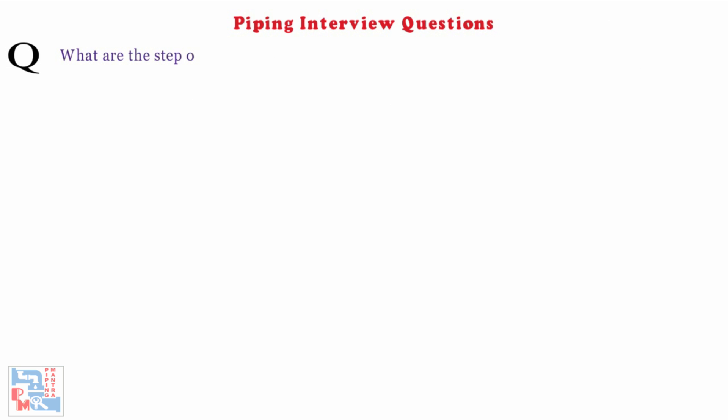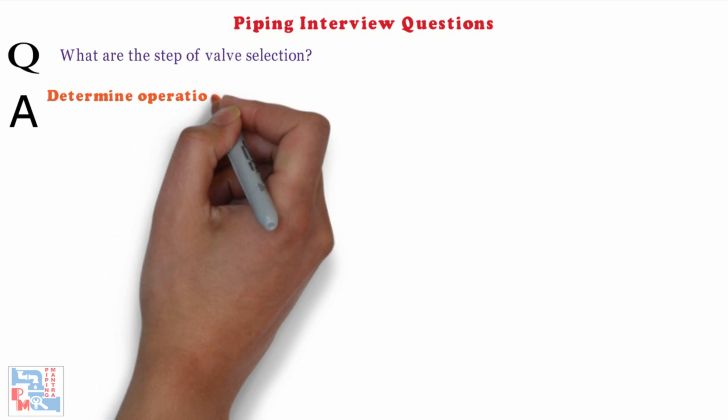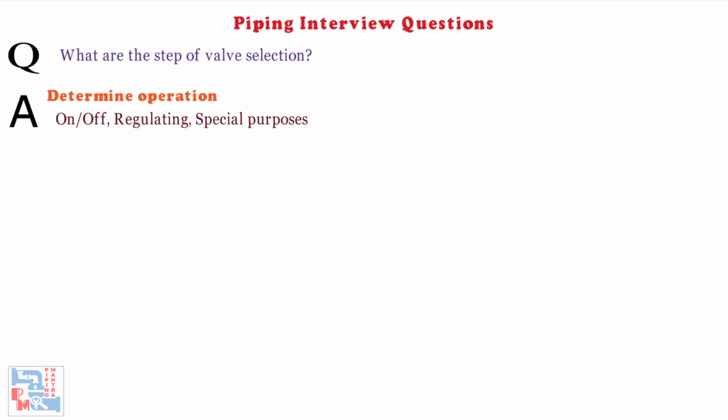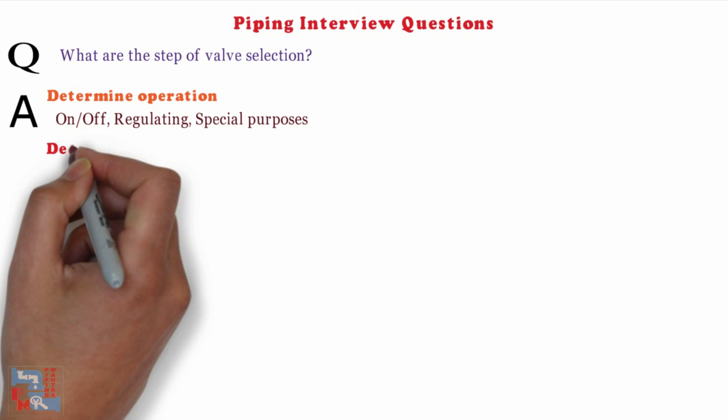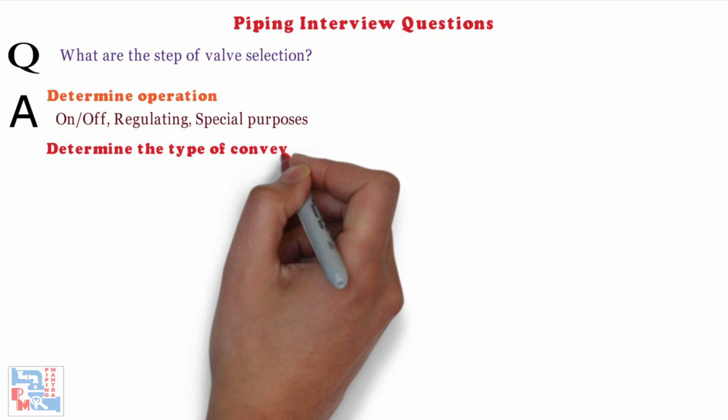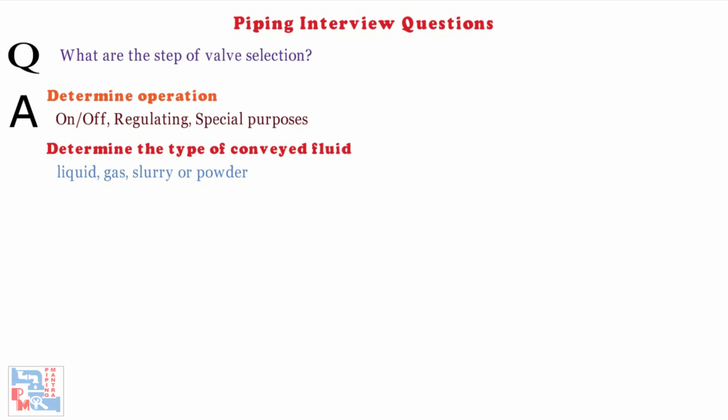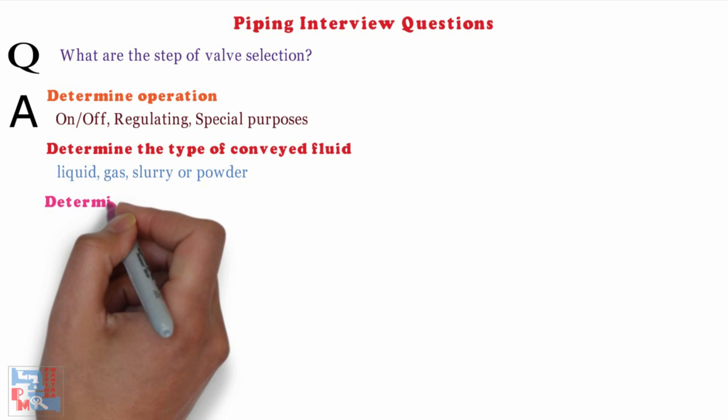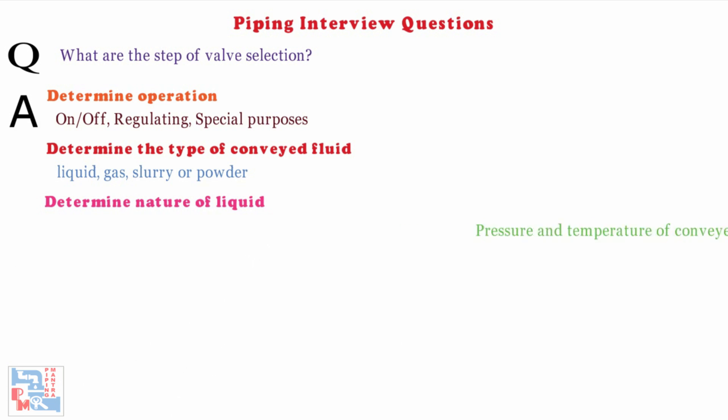Next, what are the steps of valve selection? Determine operation: on-off, regulating, special purposes. Determine the type of conveyed fluid: liquid, gas, slurry or powder. Determine the nature of liquid, pressure and temperature of conveyed fluid, cost, availability, installation problems such as welding valves into lines.